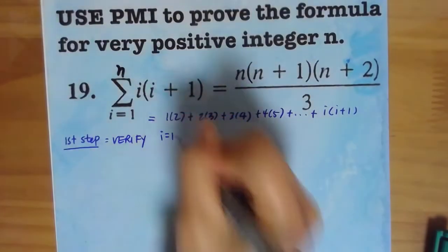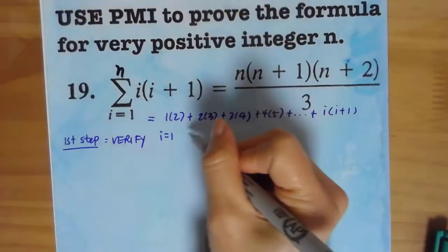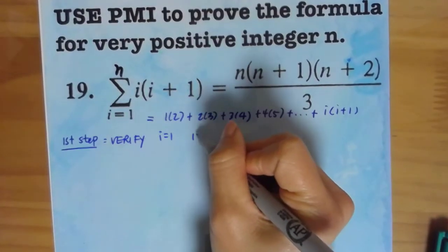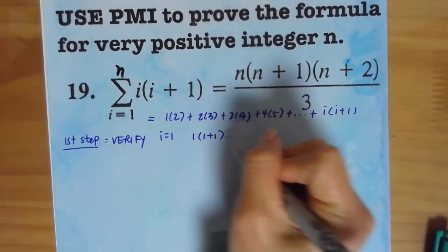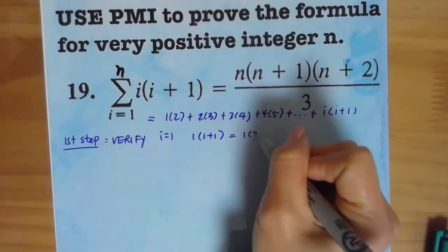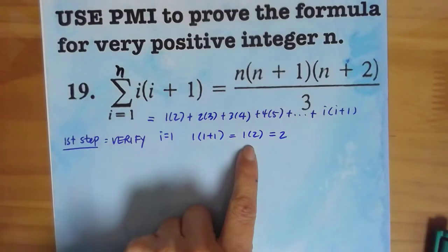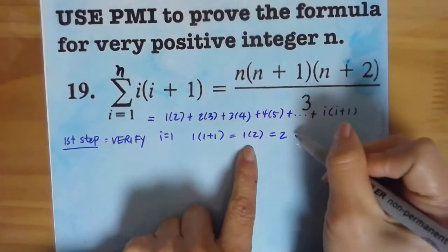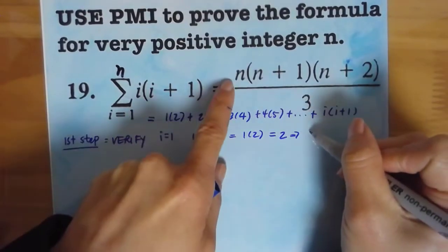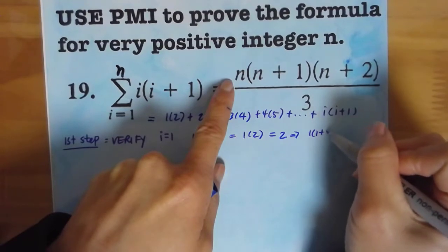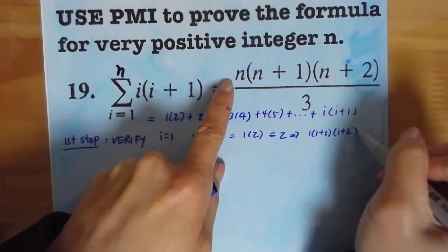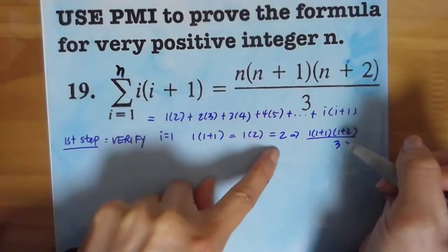Verify that i equals 1 is true. So we're going to do that. Let's do 1 times 1 plus 1. What is that? That's equal to 1 times 2, that's 2. Let's try it in our formula here. Let's show that it's true for this formula here. 1 times 1 plus 1, 1 plus 2 divided by 3. Let's see if they're true.